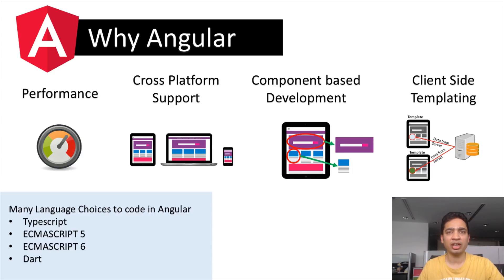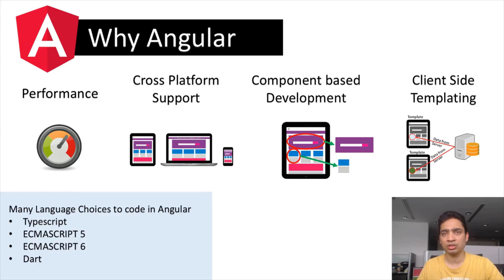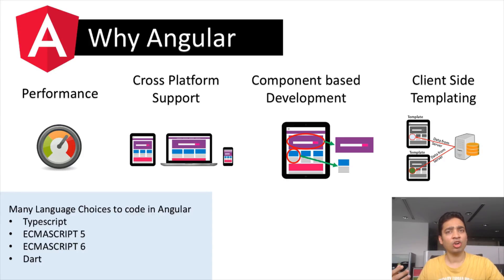Another advantage of Angular is language choice. You can write Angular in TypeScript, ECMAScript 5 or 6 (which is JavaScript), or Dart — a language developed by Google. The most popular choice is TypeScript. TypeScript compiles back to JavaScript and is an open-source language developed by Microsoft. Angular is built on TypeScript. It is object-oriented, resembling C# and Java with classes, inheritance, and similar features, making it easier to learn.